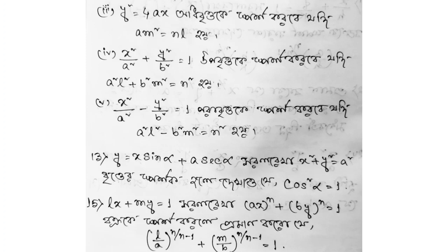Number 4: x squared by a squared plus y squared by b squared equals 1; the circle is touched if a squared l squared plus b squared m squared equals n squared. Number 5: x squared by a squared minus y squared by b squared equals 1; the parabola is touched if a squared l squared minus b squared m squared equals n squared.